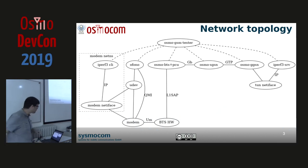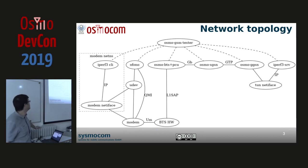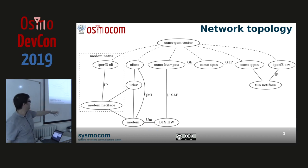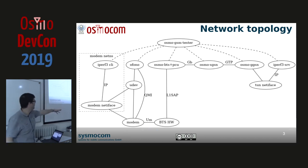Osmosism Tester, which is on top, is orchestrating all the processes. I'll go later about that NetNS stuff, but you can basically see Osmosism Tester controlling all different processes, from left to right: MS side to more like core network side on the other end.